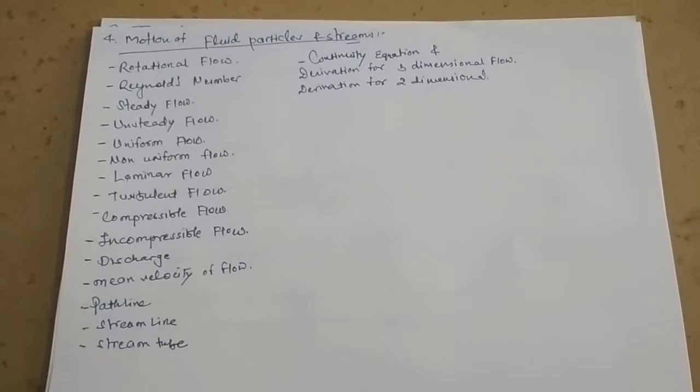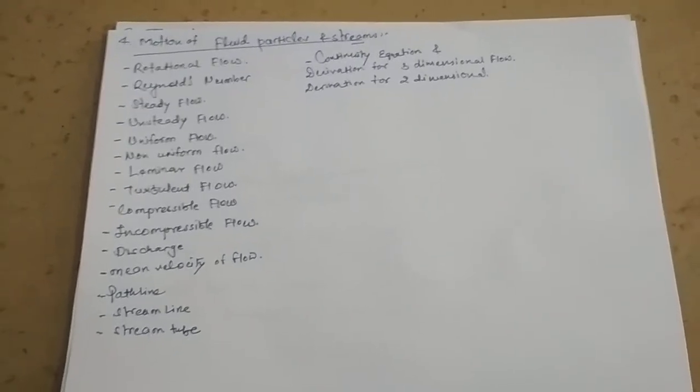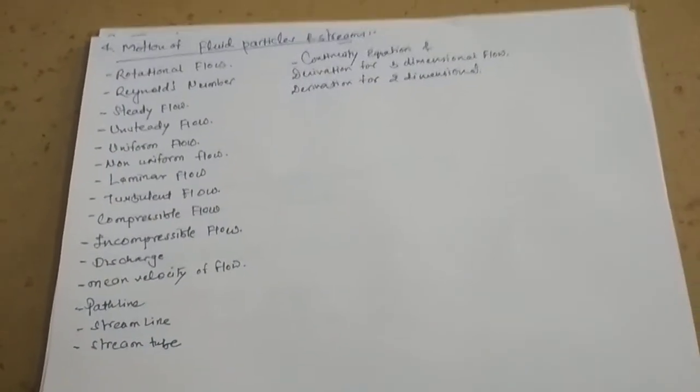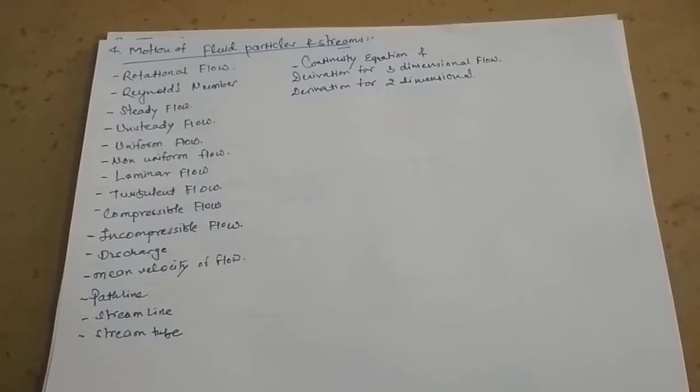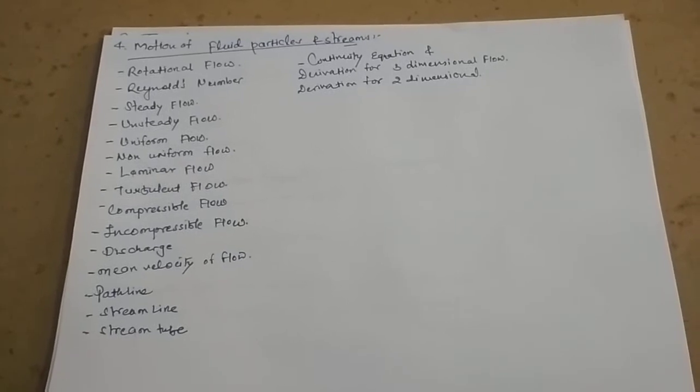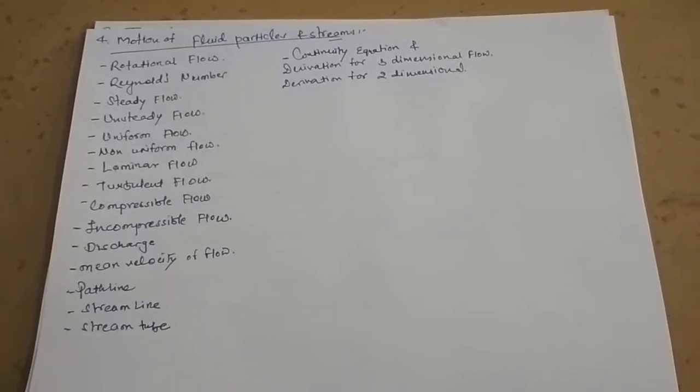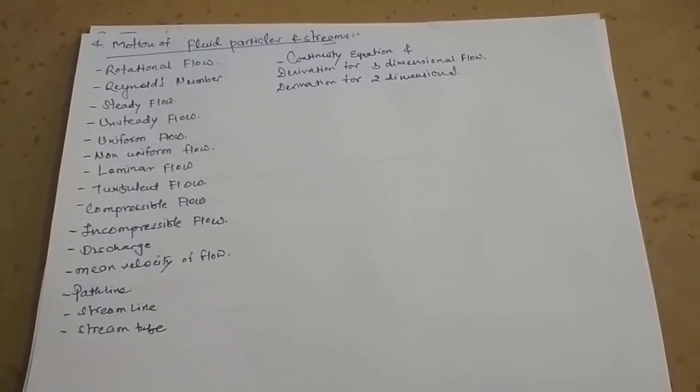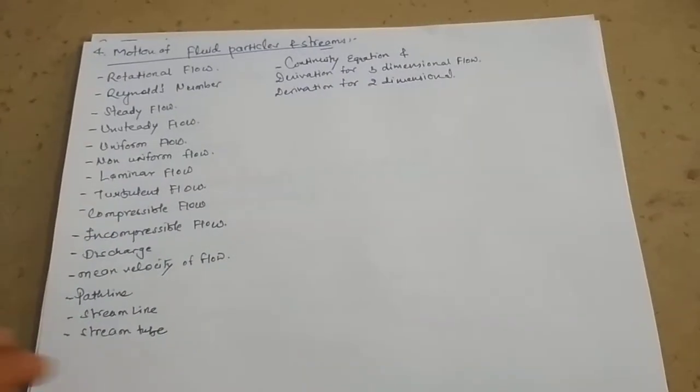Be clear with center of gravity and moment of inertia formulas. Be clear with figures and don't forget metacenter, metacentric height. This is the fourth chapter, Motion of Fluids and Particles and Streams. There is one theory, continuity equation, derivation of two-dimensional and three-dimensional flow. You cannot forget continuity equation's derivation.